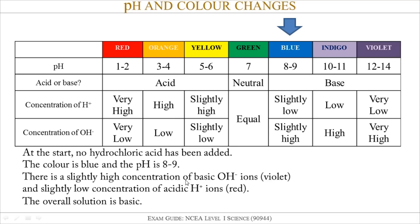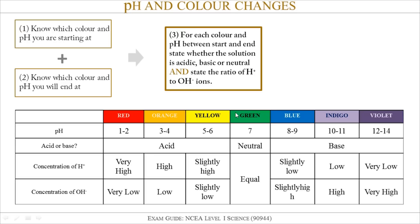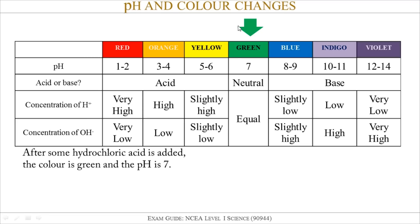So at the start, the color is blue and the pH is 8 to 9. There is a slightly high concentration of OH- ions and a slightly low concentration of H+ ions. The OH- ion is responsible for the solution being basic, and is also responsible for the color change towards the violet side of universal indicator. The H+ ion is responsible for the solution being acidic and for the color change towards the red side. But overall, the pH is still 8 to 9, so the solution is still basic.